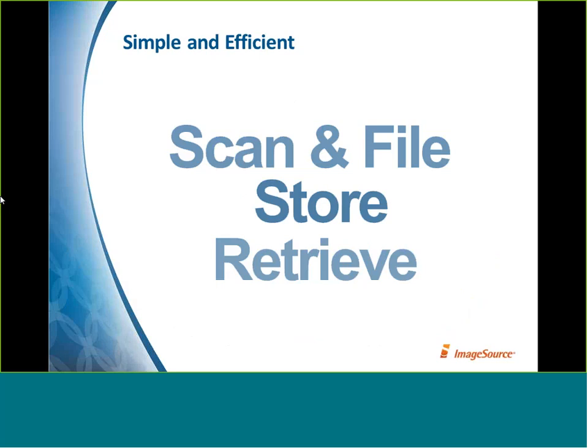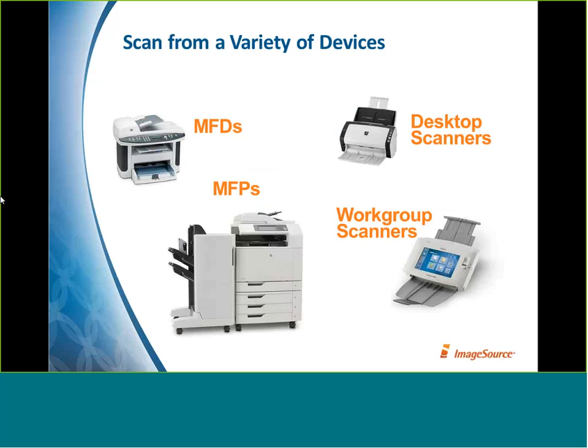Content Store was born out of the idea that many companies and government agencies may not need a lot of advanced features — they simply need to scan and file paper and digital documents, securely store them, and retrieve them either from within or outside the office. Content Store supports a variety of scanning devices, starting with document scanners from Fujitsu, Canon, Panasonic, and Kodak. All that's needed for a directly attached scanner is that it supports TWAIN-based scanning. It also works with multi-function devices, multi-function printers, and network-group type scanners — essentially any kind of device you might use for scanning.